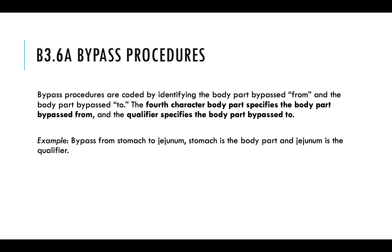Bypass procedures: The fourth character (body part) specifies the body part bypassed from, and the seventh character (the qualifier) specifies the body part bypassed to. For example, in a gastric bypass, the esophagus would be character 4 and the duodenum would be character 7. On the tables, you'll see the various body parts — from and to — that are available.